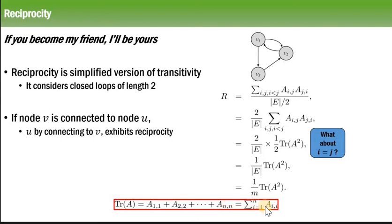For the adjacency matrix, the question is what about i equals j? Here we are not considering i equals j, only i less than j. When there is i equals j in the adjacency matrix, then there is a self-loop from v1 to v1 only. So we are not going to consider that self-loop. We are dealing with a closed loop, so whenever there is a closed loop there is reciprocity.